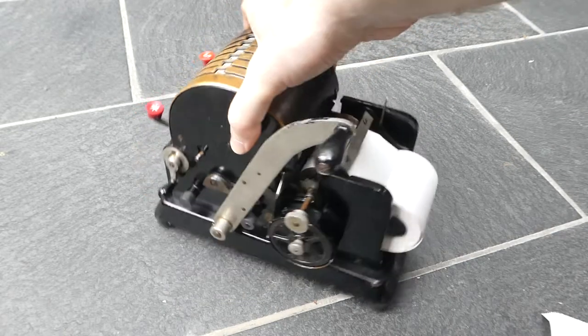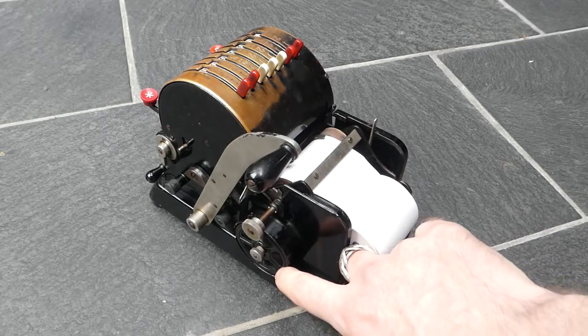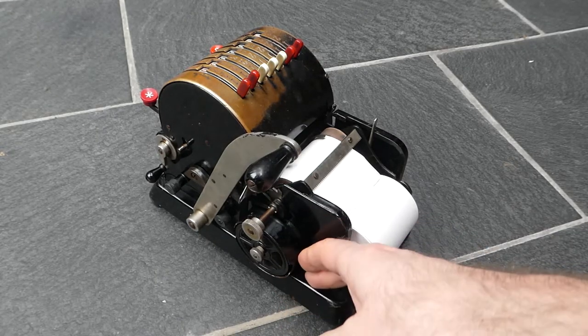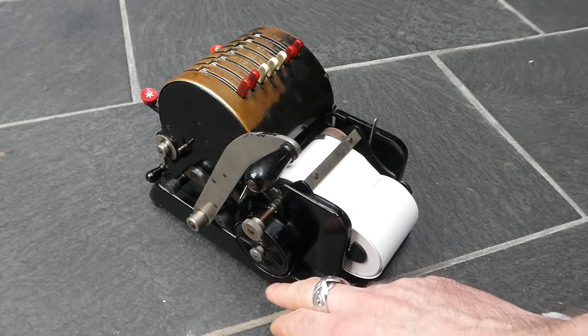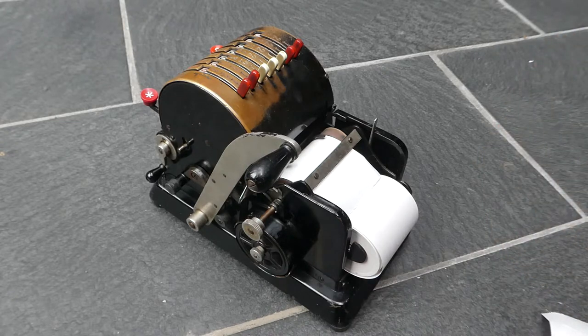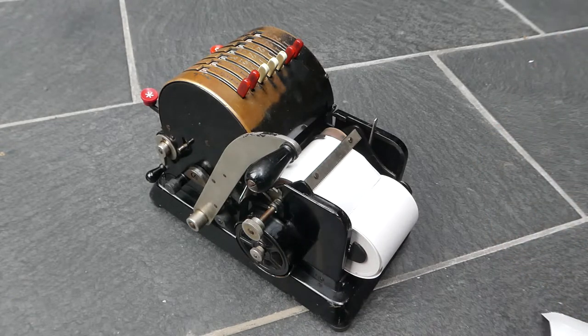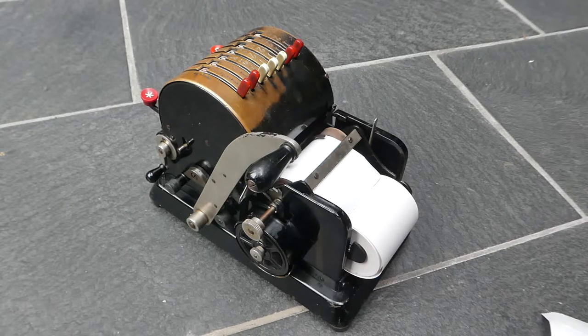The printing uses this ink ribbon on these spools. It's the same as with a typewriter but you do have to use the old fashioned silk ink ribbons. If you use a more modern nylon one the printing just won't work on this.